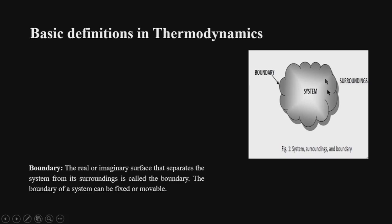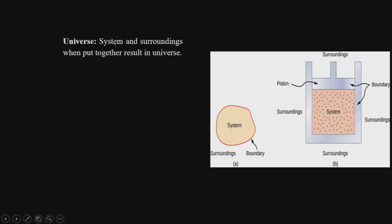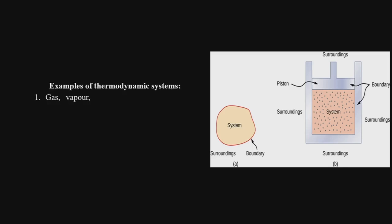The third term is the boundary — the real or imaginary surface that separates the system from its surroundings. The system, surroundings, and boundary together constitute the total universe. A universe is nothing but the system and surroundings put together. We can see the different types of systems shown in the figure.